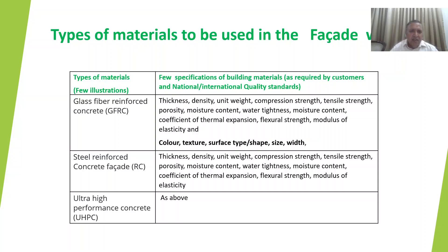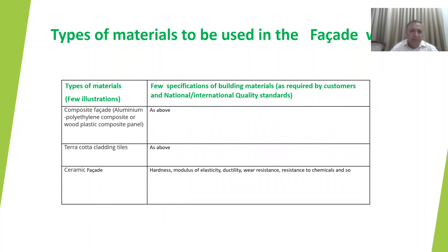For steel reinforced concrete façade, the parameters are similar: thickness, density, unit weight, compression strength, tensile strength, porosity, moisture content, water tightness, coefficient of thermal expansion, flexural strength, and modulus of elasticity. For ultra high performance type of façade, similar parameters apply. For composite façade — aluminum, polyethylene, composite or wood, plastic, and terracotta cladding tiles — the input specification characteristics are practically similar; some may not be relevant but most properties apply.